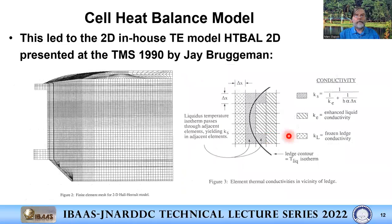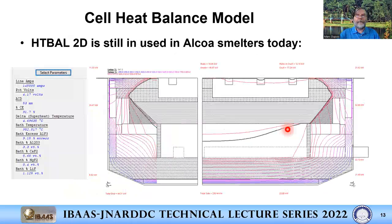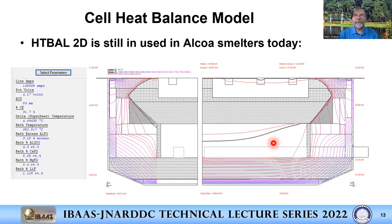That's why they shifted to a mesh with finite element or finite difference. In this case it's a finite element mesh, developed by Jay Bergman at Alcoa for Heat Balance 2D — the next generation after Warren Opie's pioneer work. There are details on how you treat the change of property from ledge to liquid. Alcoa still uses this kind of in-house 2D model today instead of commercial code.